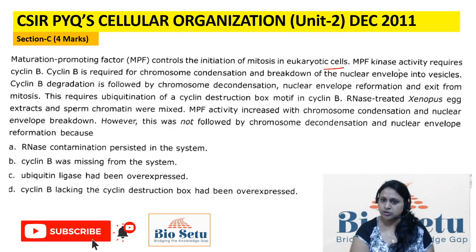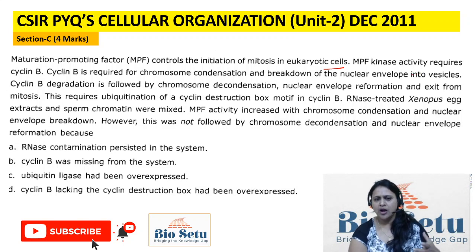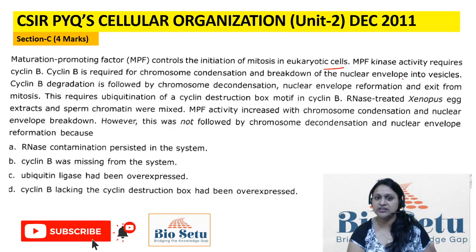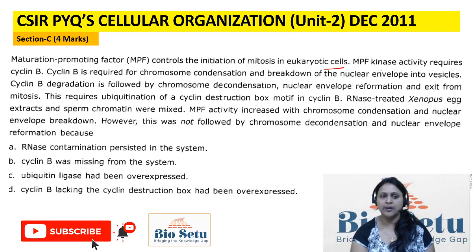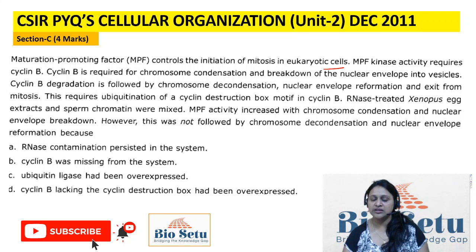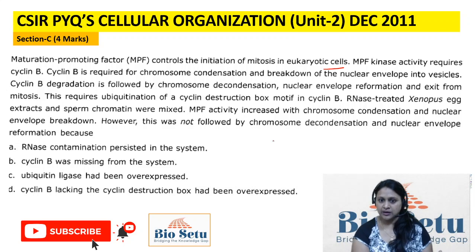Maturation Promoting Factor kinase activity requires Cyclin B, as I have already said — this needs Cyclin B. We know that each and every phase of the cell cycle has specific Cyclin activity. A specific Cyclin pairs with a specific CDK and then it works in a phase-specific manner. Cyclin B is required for chromosome condensation and breakdown of the nuclear envelope in our cycle.